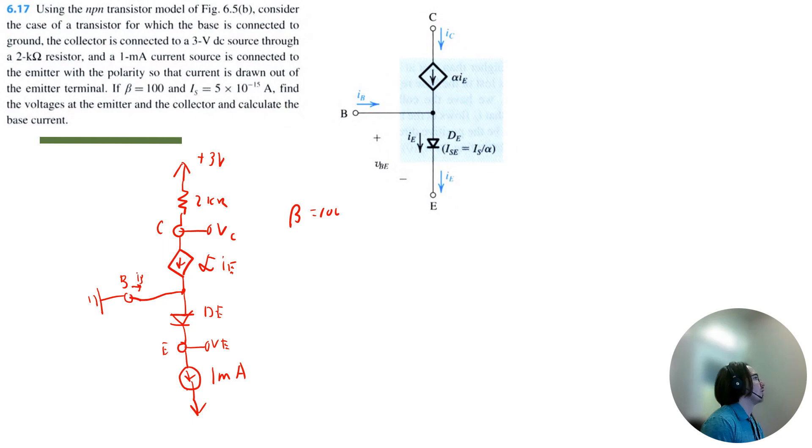We're given beta equals 100 and Is equals 5 times 10 to the negative 15 amps. First we want to find the voltages at the emitter and the collector. I know I can solve for alpha equals beta divided by beta plus 1, so that's 100 divided by 101, which is 0.99 approximately.